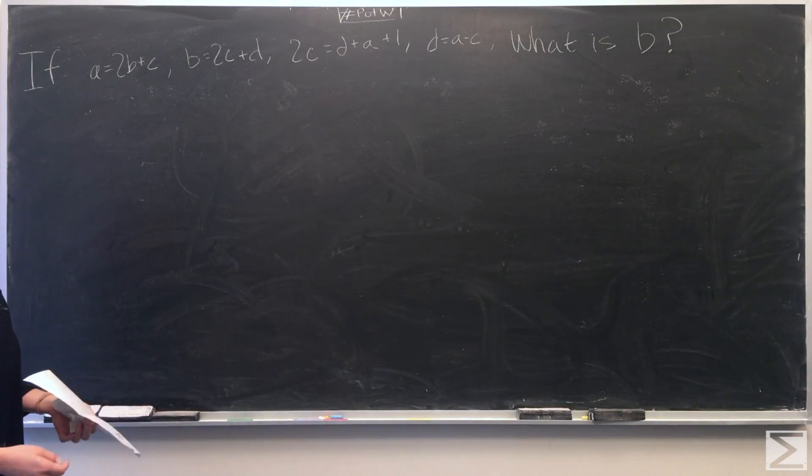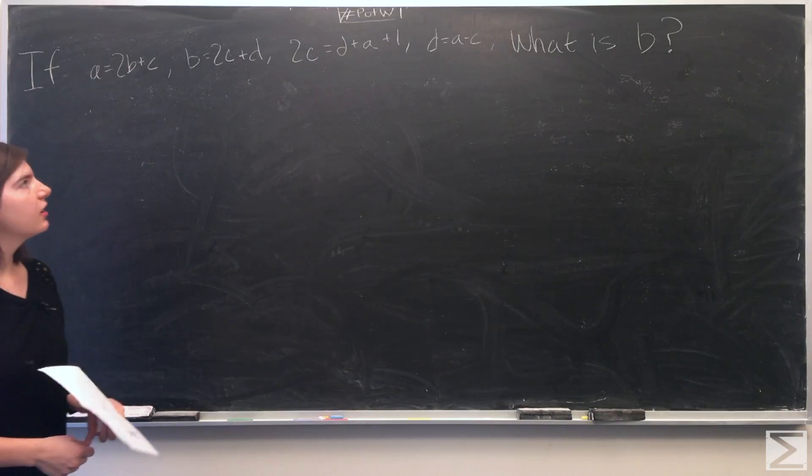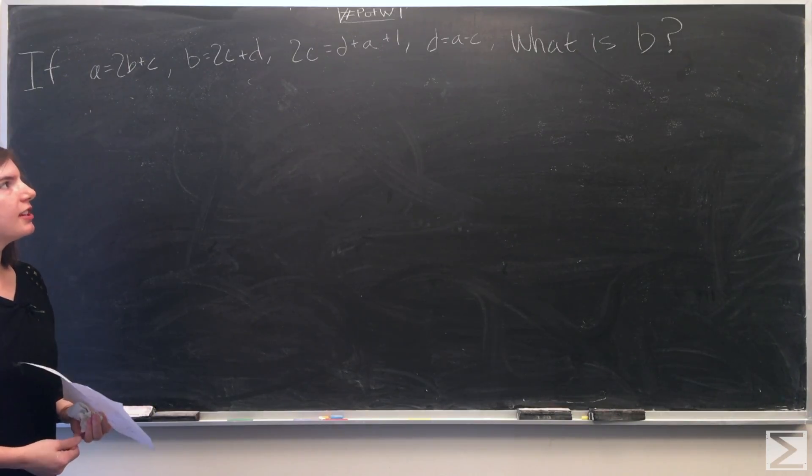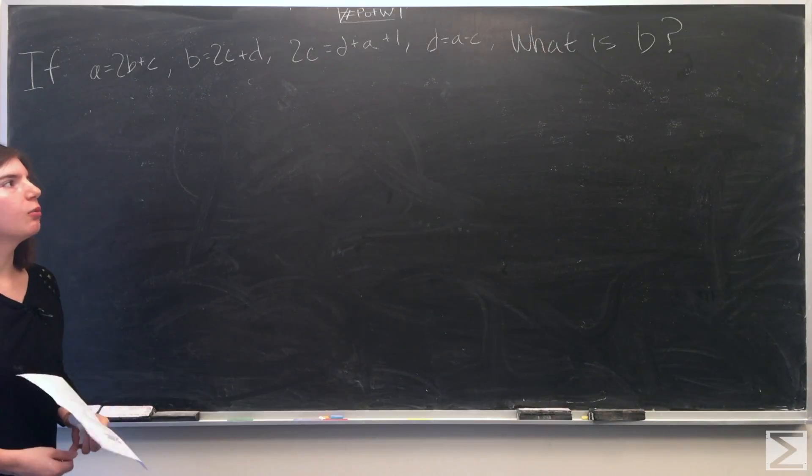If a equals 2b plus c, b equals 2c plus d, 2c equals d plus a plus 1, and d equals a minus c, what is b?